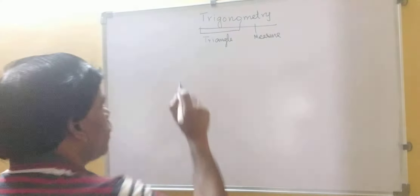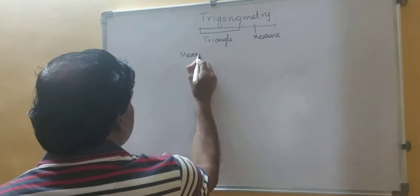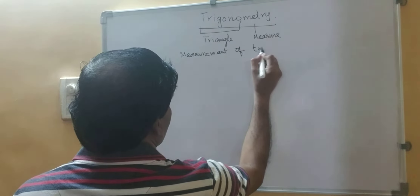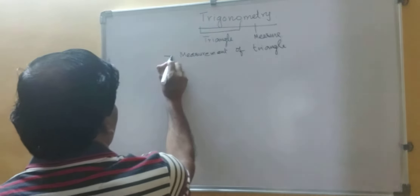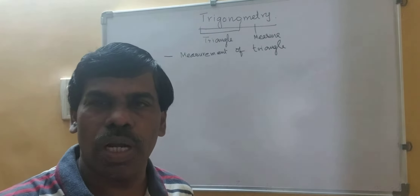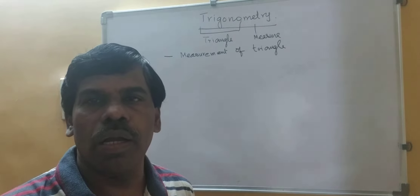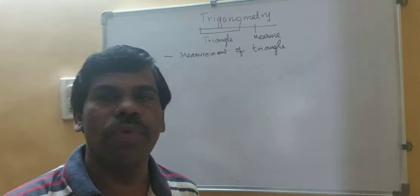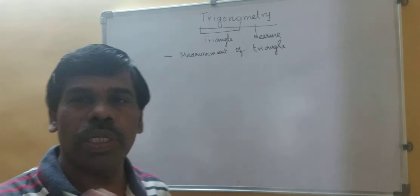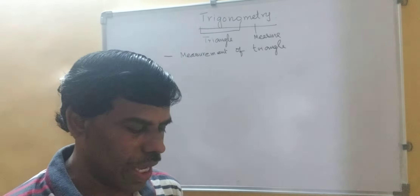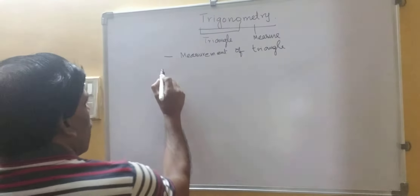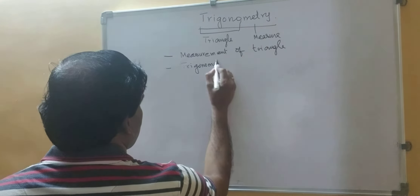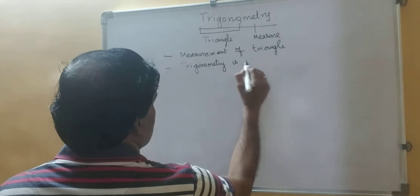Measurement of triangle means what is there inside the triangle — the angles — and then the outside sides. So we are going to measure the angles and sides of the triangle. That means trigonometry is the study of triangle.